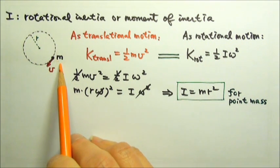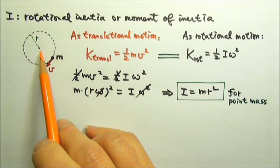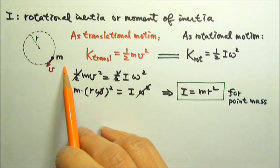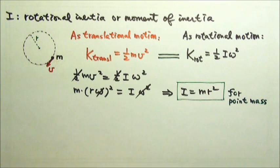For the same mass m, the closer it is to the rotational axis, the smaller the rotational inertia. The farther away it is from the rotational axis, the larger the rotational inertia.